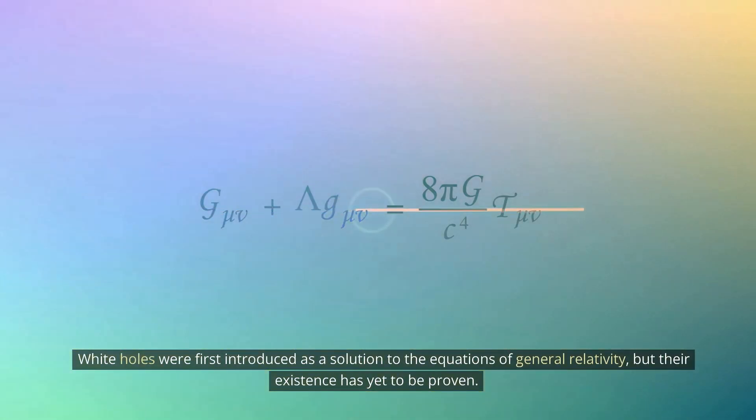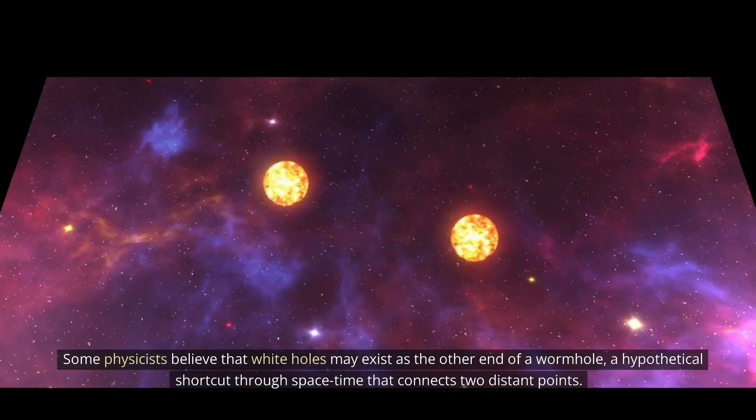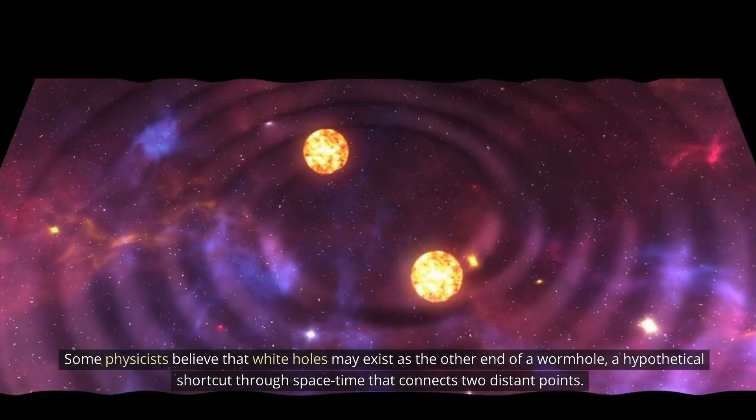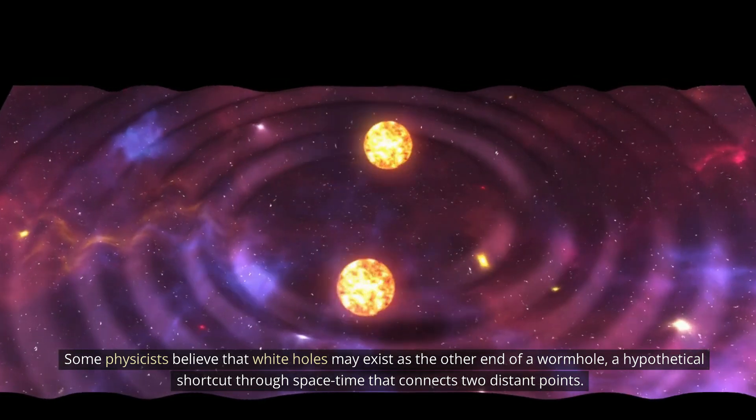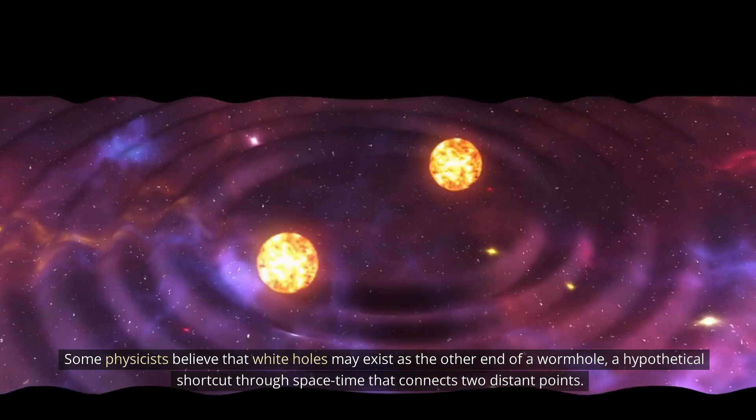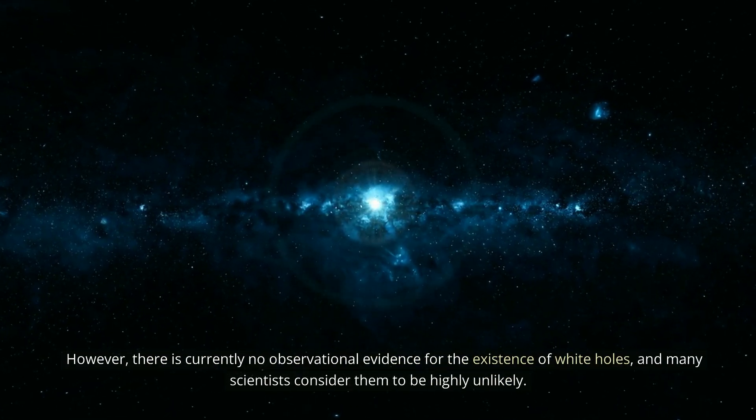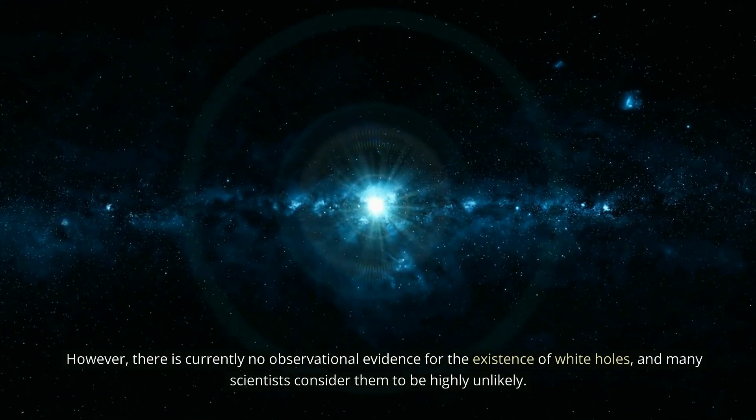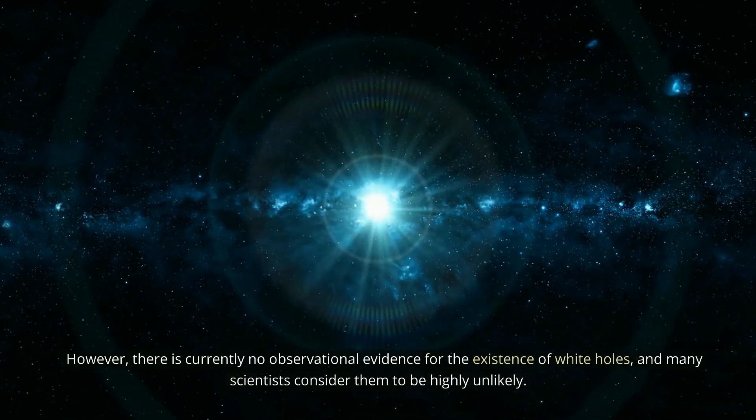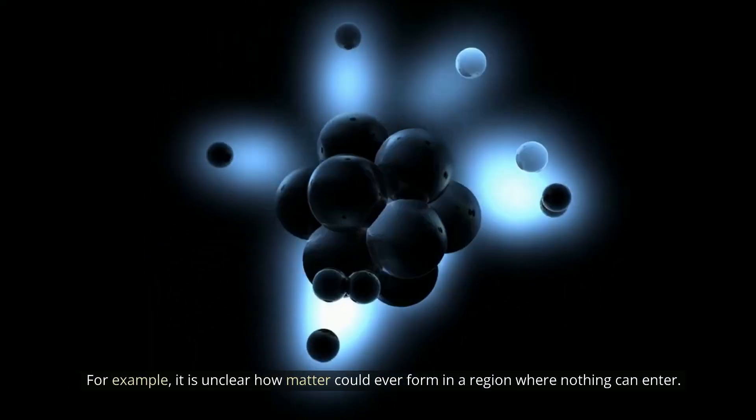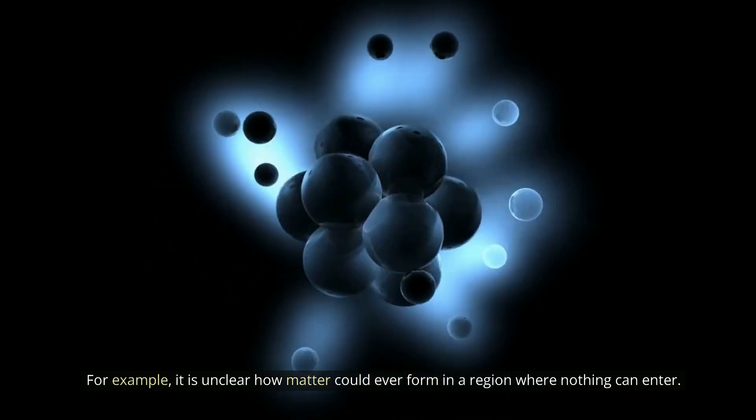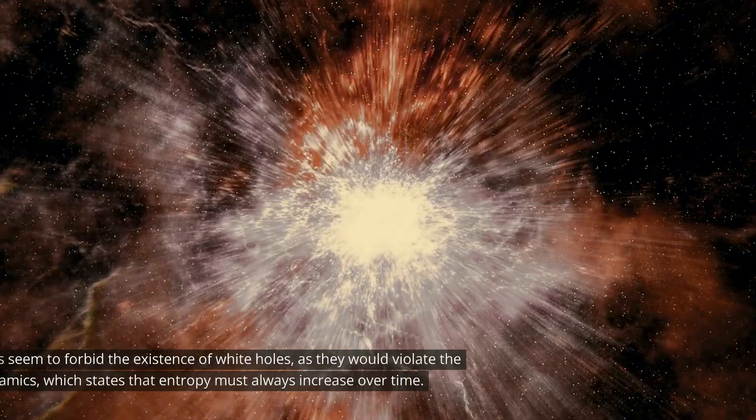White holes were first introduced as a solution to the equations of general relativity, but their existence has yet to be proven. Some physicists believe that white holes may exist as the other end of a wormhole, a hypothetical shortcut through spacetime that connects two distant points. However, there is currently no observational evidence for the existence of white holes, and many scientists consider them to be highly unlikely. For example, it is unclear how matter could ever form in a region where nothing can enter.